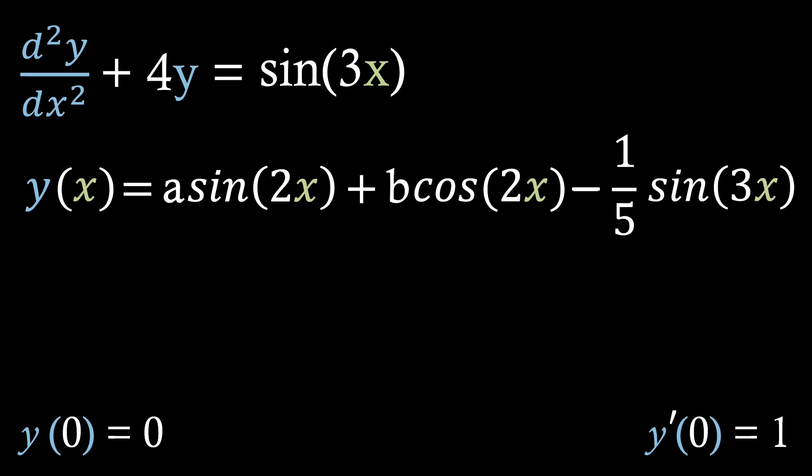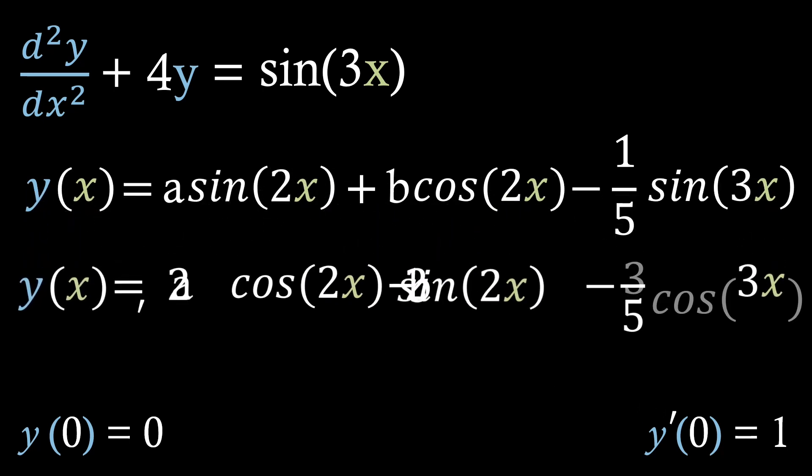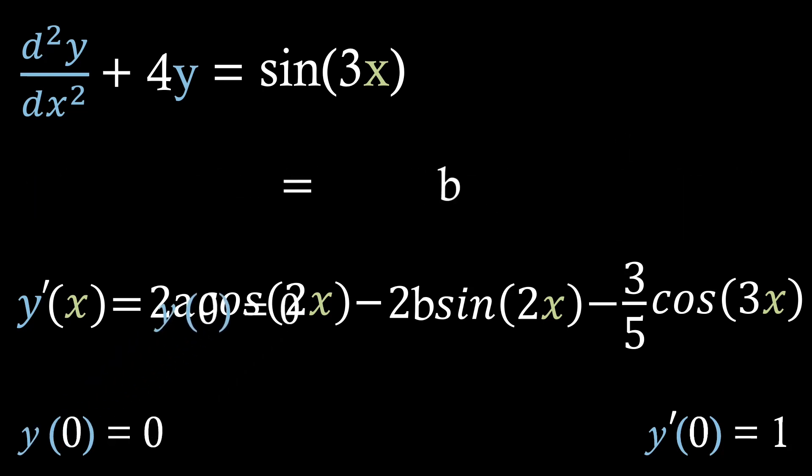So naturally, what we're going to want to do is turn this into a simultaneous equations problem. Firstly, we need to differentiate our general solution so that we can use our second initial condition. Now if we start by looking at our non-differentiated general solution, and if we put in our values that we've got in the bottom left corner, we'll find that b actually just is 0, as the sine terms disappear.